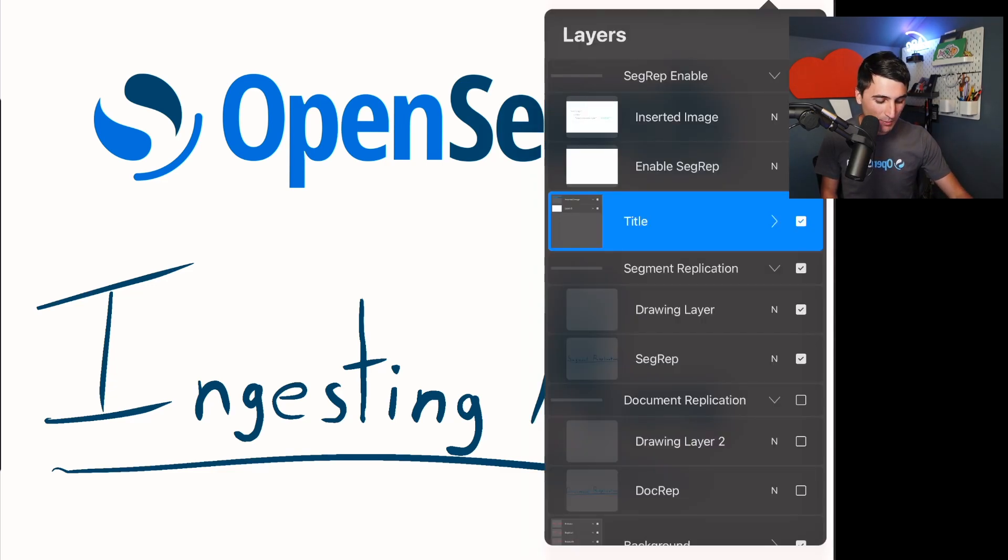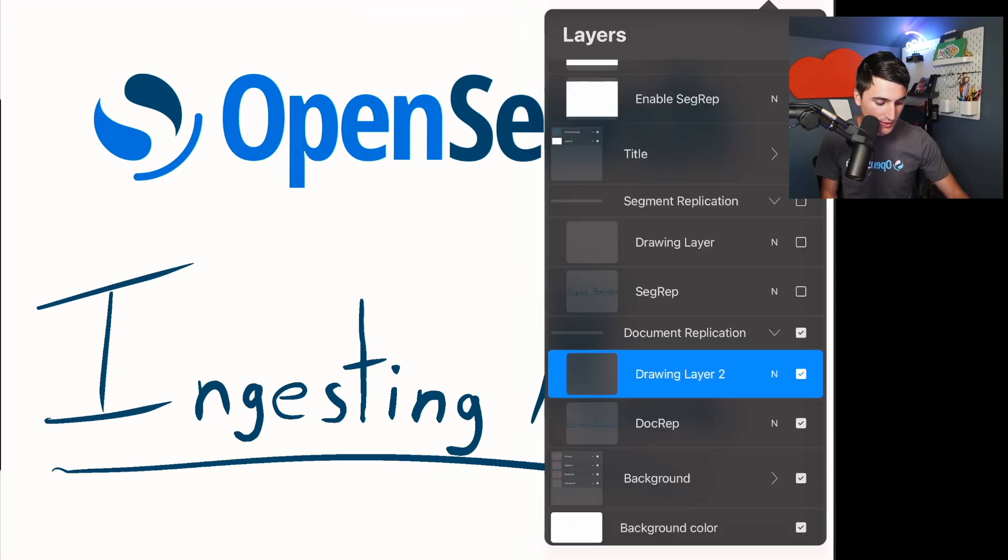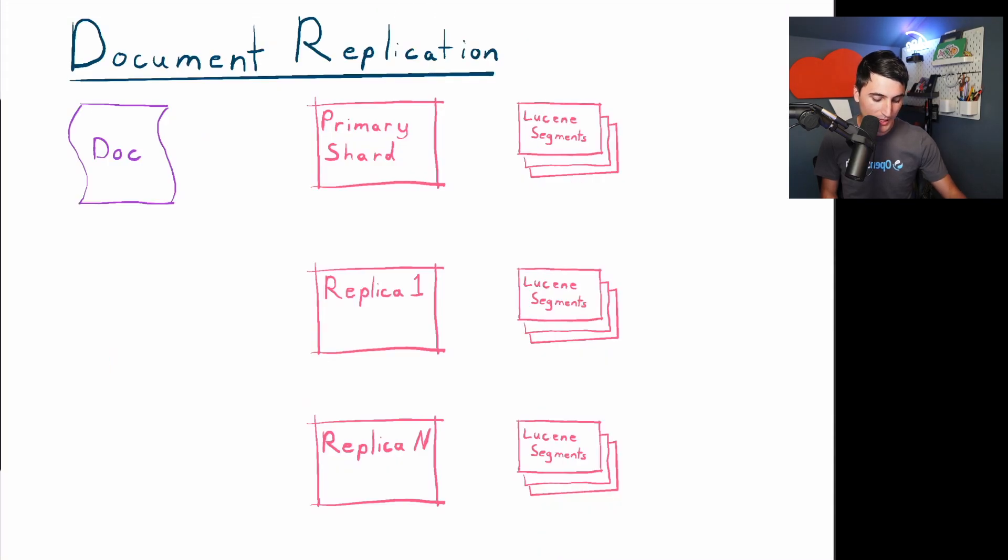With that, let's talk about how OpenSearch does replication out of the box. Our default is to use document replication. Here's how document replication works. We take a document. That document gets ingested back into our primary shard.